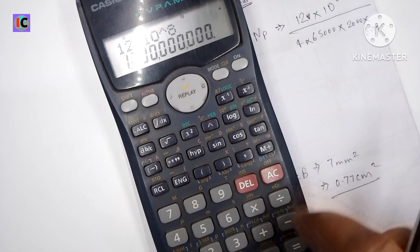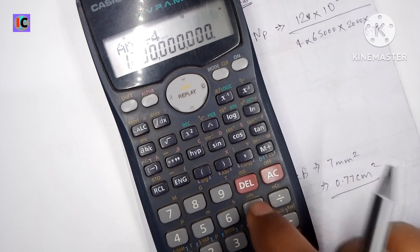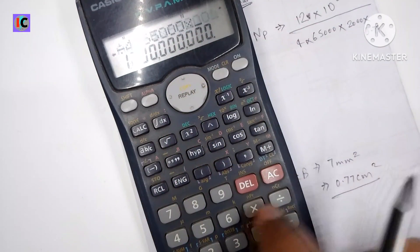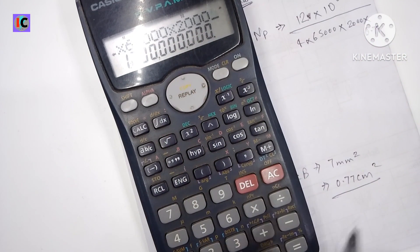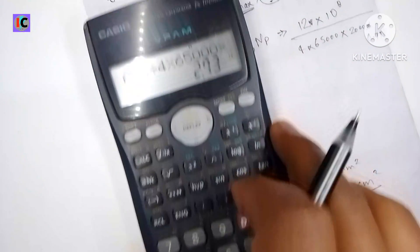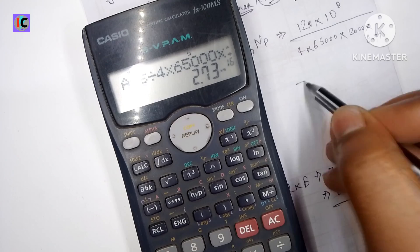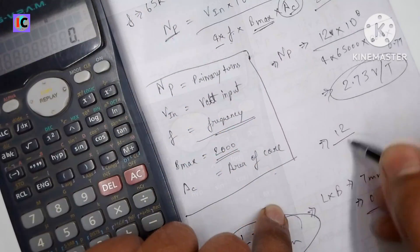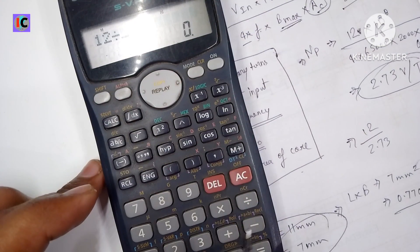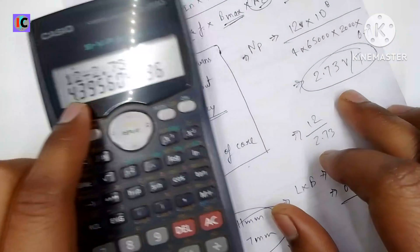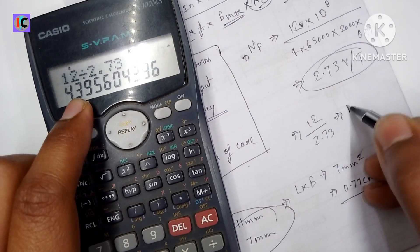So the value we find in the formula and calculate according to this. After this we can find the voltage per turn. Here we got 2.73 volts per turn, which means if we make one turn on this transformer core, the voltage will be 2.73 volts.